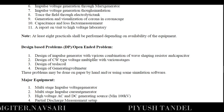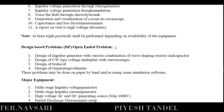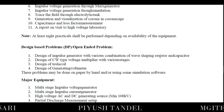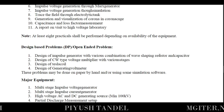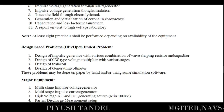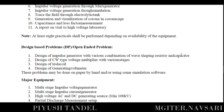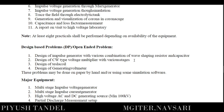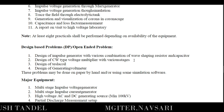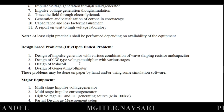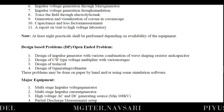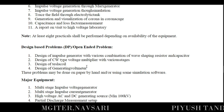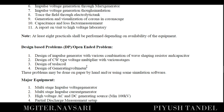Here are the design-based open-ended problems to perform in groups. First: design of an impulse generator with various combinations of wave-shaping resistors and capacitors to generate high voltage. Second: design of a Cockcroft-Walton (CW) type voltage multiplier with various stages. Third: design of a Tesla coil. Fourth: design of an electrostatic voltmeter. These are mini-projects to be performed apart from regular project work and laboratory work for this subject.